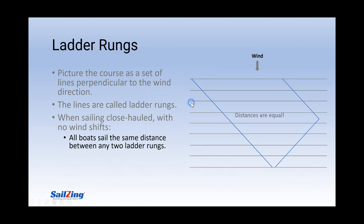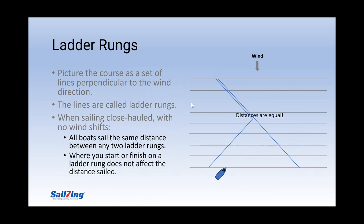If we compare these courses just like before, the distances are equal. For the same reason, where you start or finish on a ladder rung does not affect the distance sailed. This may be hard to believe at first, but it's simply because the boats can't sail directly to the mark, and all the boats sail at the same angles as the other boats going up the course, assuming they are all pointing properly.